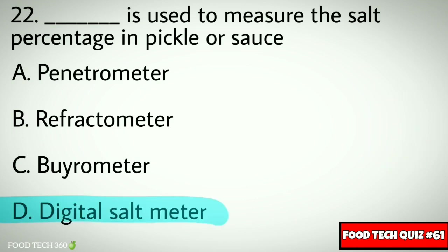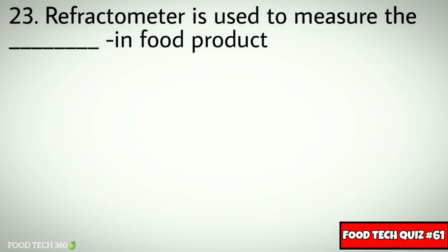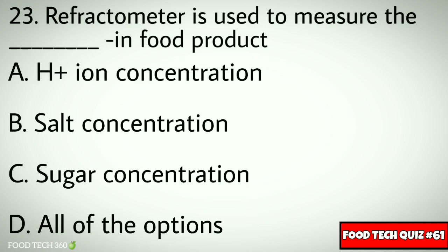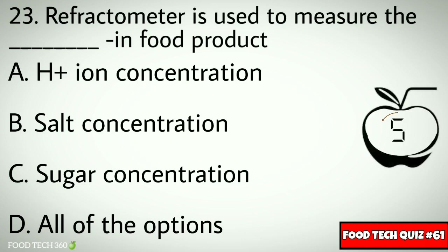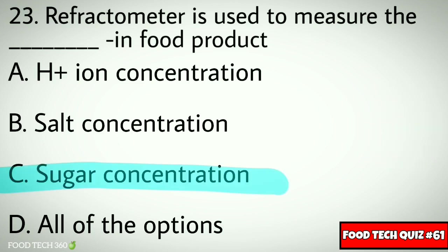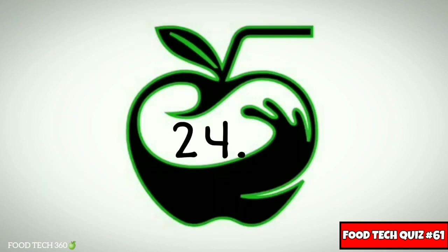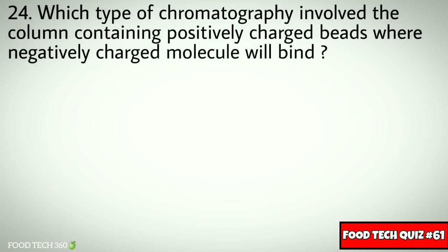Correct answer: d) digital salt meter. Question number twenty-three: refractometer is used to measure the — in food products. Options: a) H+ ion concentration, b) salt concentration, c) sugar concentration, d) all of the options. Correct answer: c) sugar concentration.